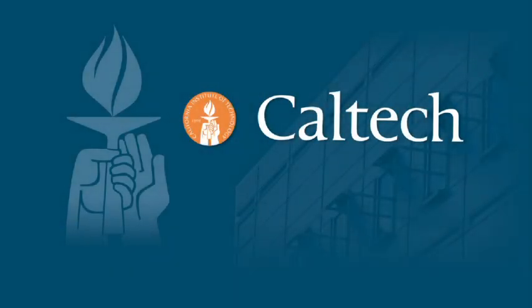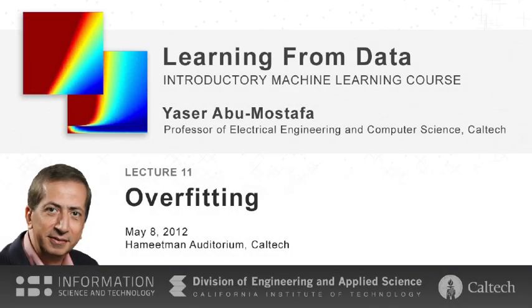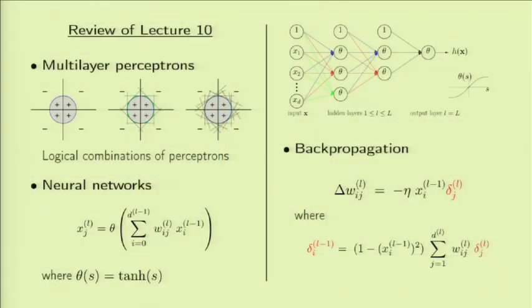Welcome back. Last time, we introduced neural networks, and we started with multi-layer perceptrons. The idea is to combine perceptrons using logical operations like ORs and ANDs in order to implement more sophisticated boundaries than the simple linear boundary of a perceptron.